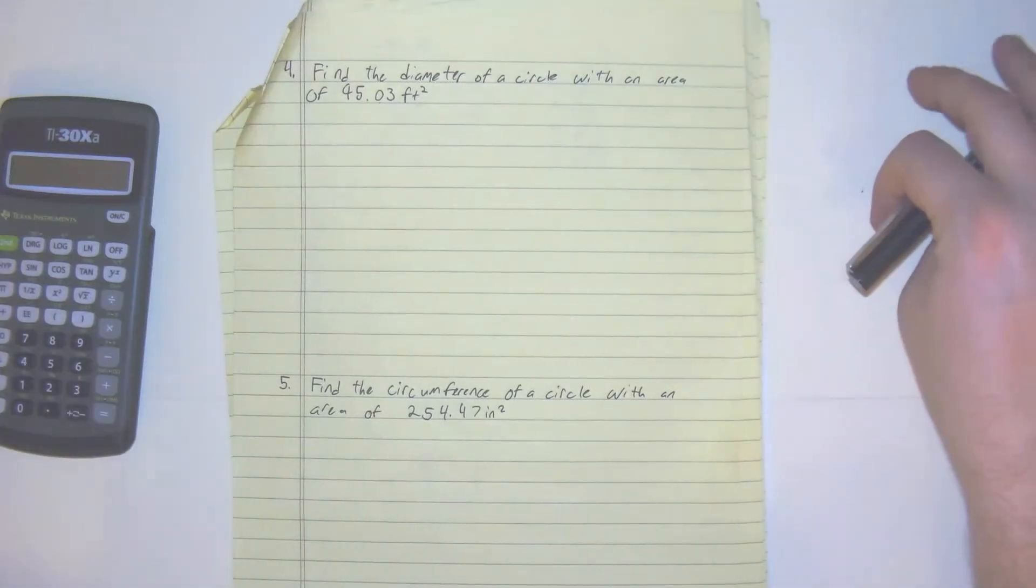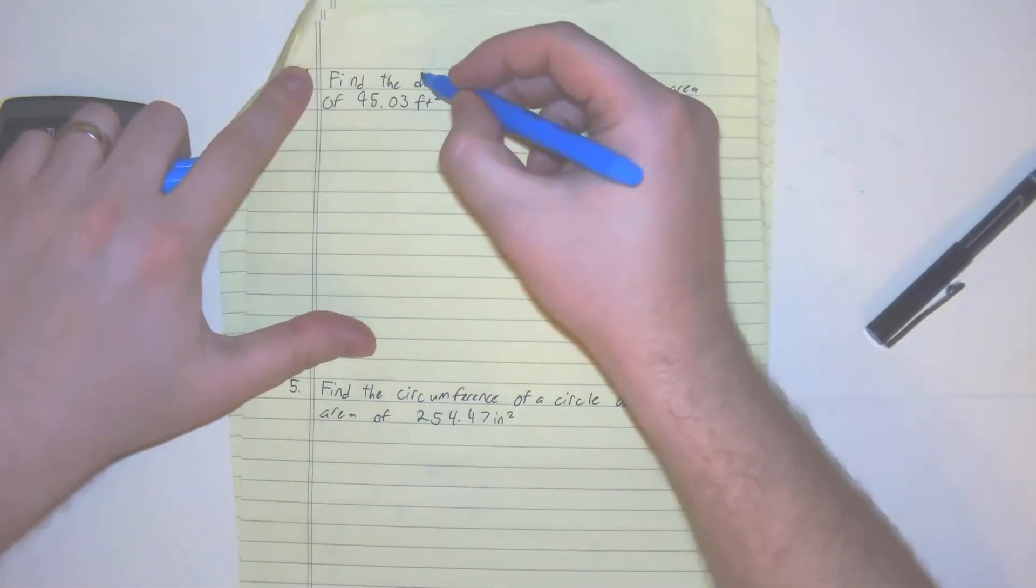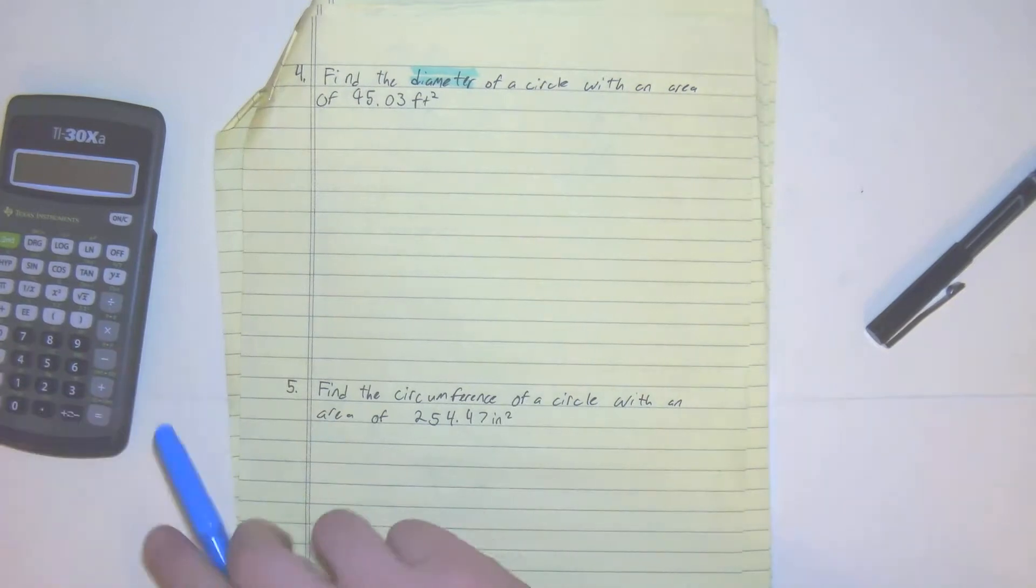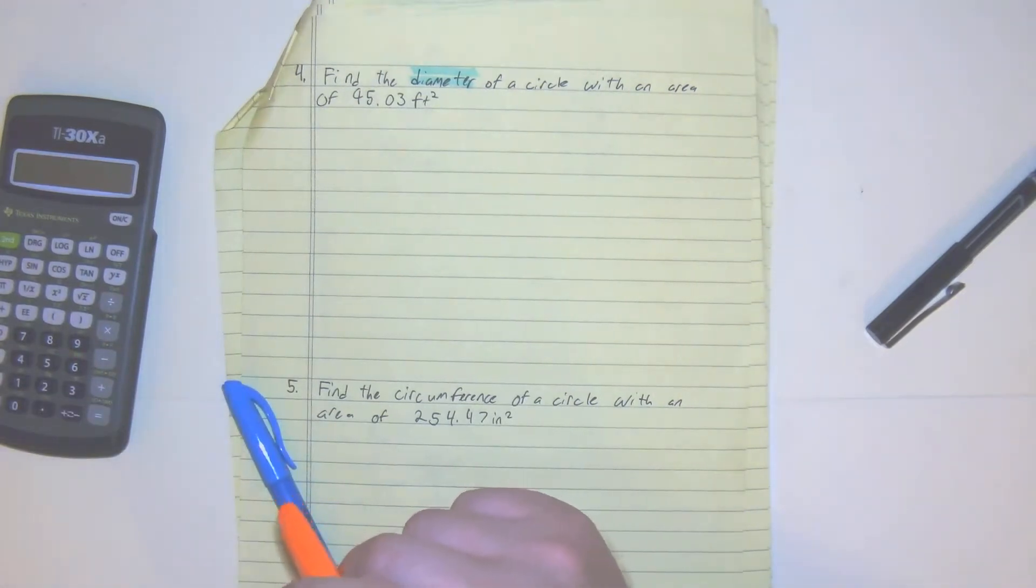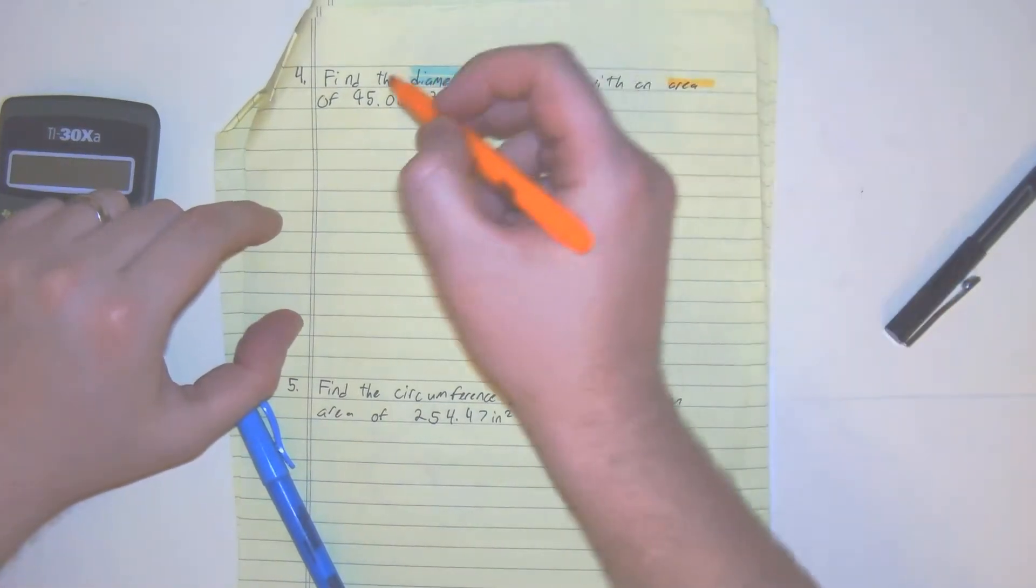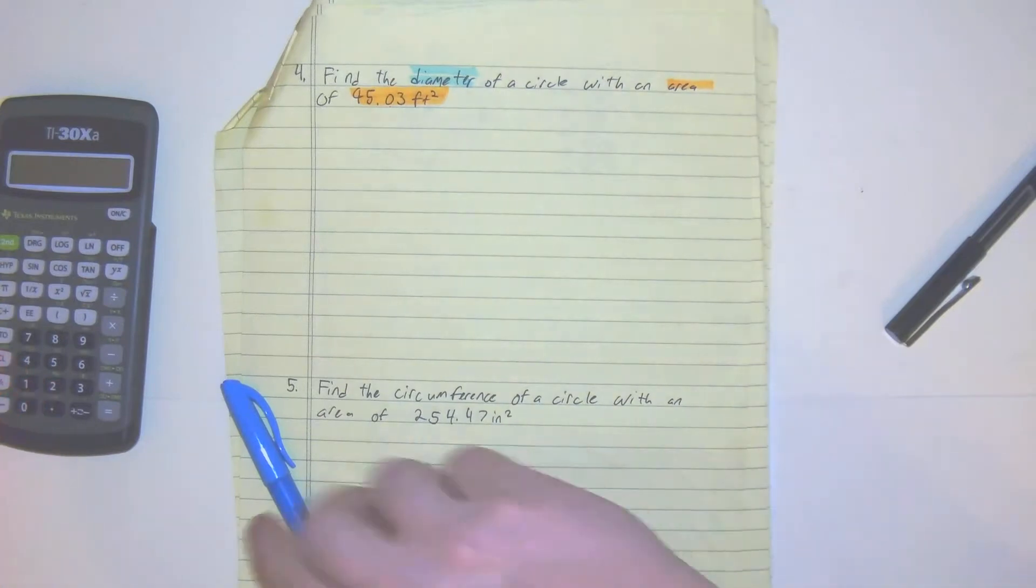We're looking at number 4 right now. Number 4 says find the diameter of a circle with an area of 95.03 feet squared.